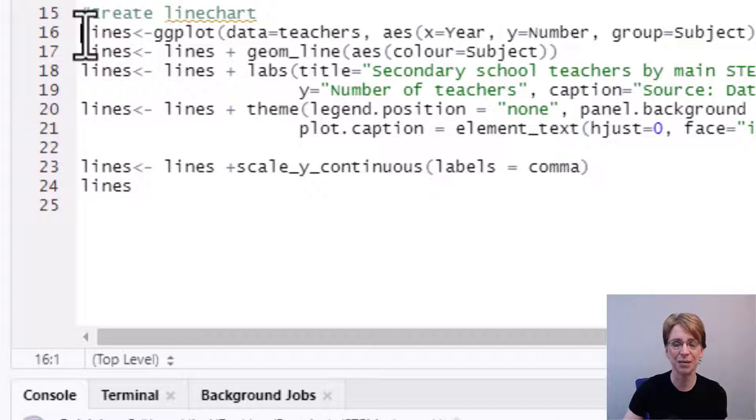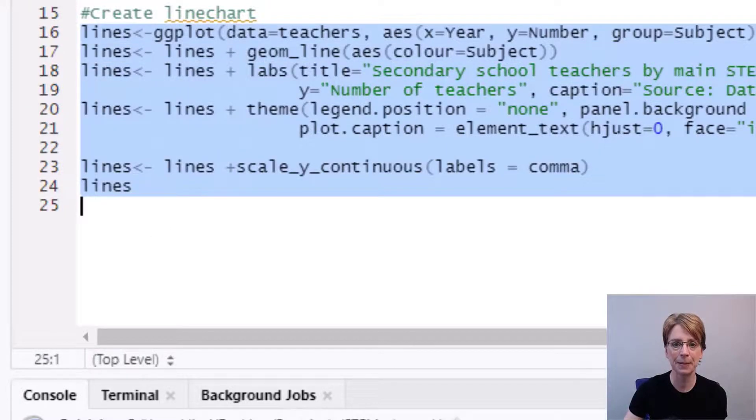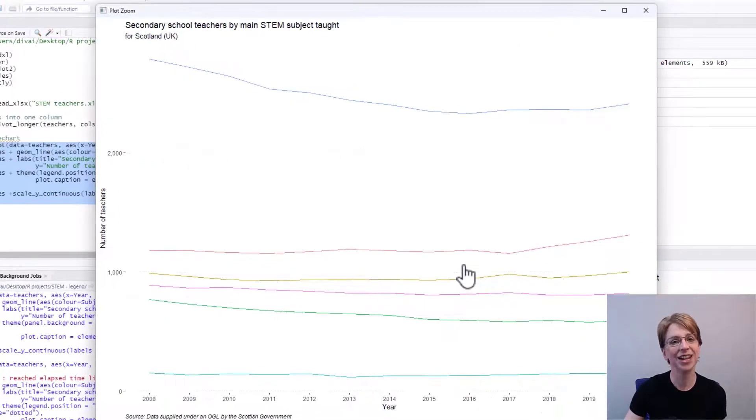Now if I run my code for my diagram again you can see that my line colours remain but my legend has disappeared.